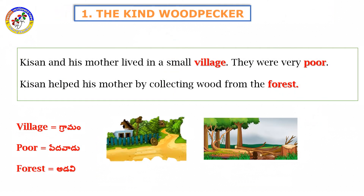Let us see The Kind Woodpecker lesson. We have already identified the characters. Kisaan and his mother lived in a small village. Kisaan used to help his mother by collecting wood from the forest.